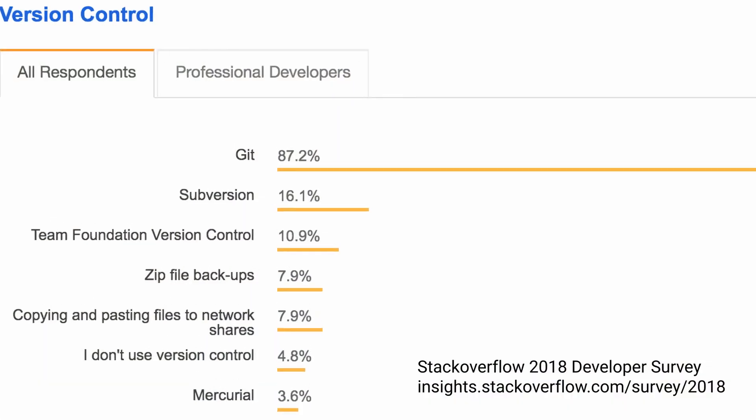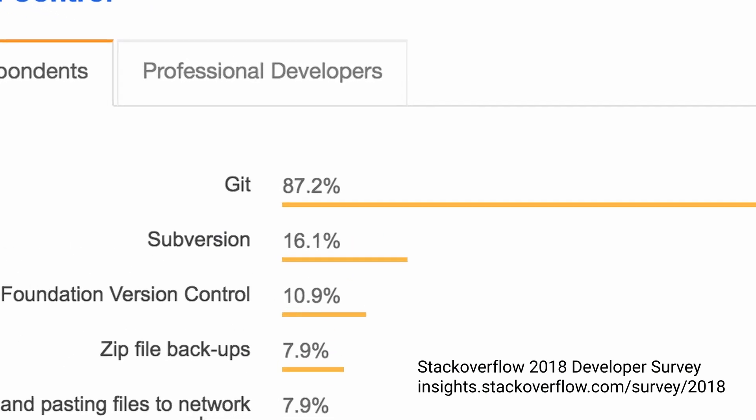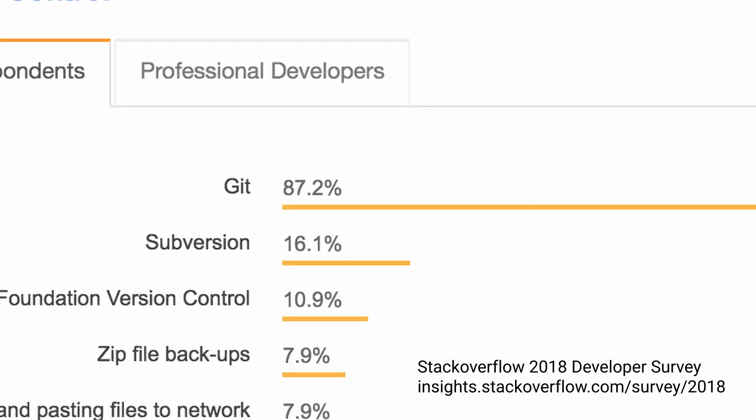Git. Aside from being a slightly rude name to call somebody, Git is a version control system. In fact, without a doubt, it is the industry standard version control system. Nowadays it is a must for every developer to know how to use Git.